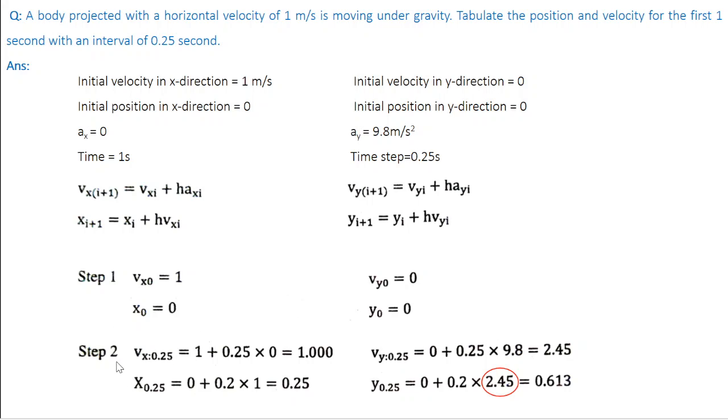In step 2, let us find velocities and position at 0.25 seconds. So v_x_0.25 equal to v_x_0 which is 1 plus step size 0.25 into a_x_0 which is 0. So 1 plus 0 which is 1.